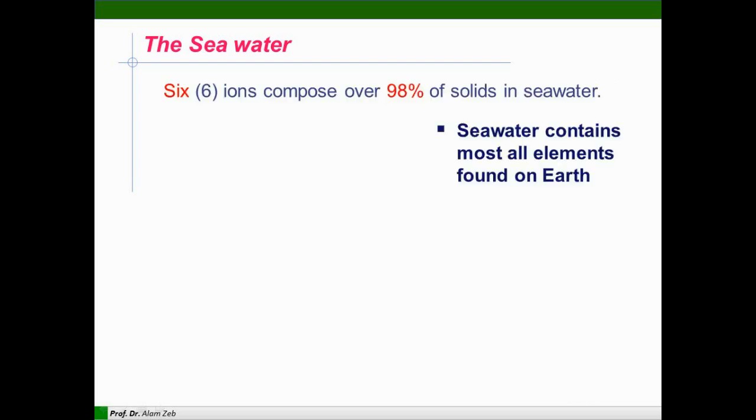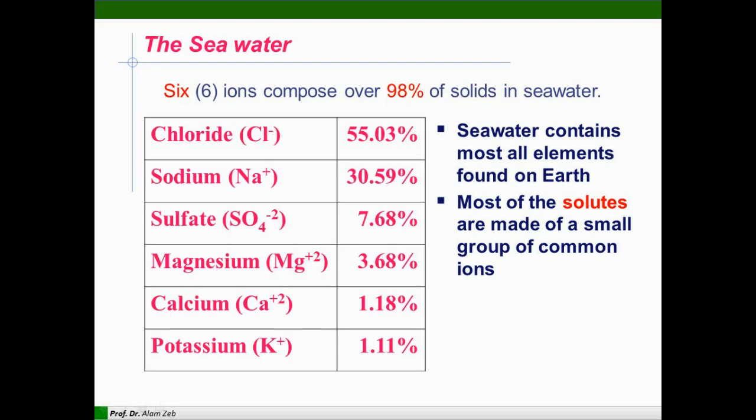Seawater composition. Six ions compose of 99.8% of the solid in seawater. It contains most of the elements found in Earth. Chloride contains 55%, sodium is more than 30%, sulfate more than 7%, magnesium, calcium, and potassium. Most of the solutes are made of a small group of common ions. In seawater, 85% of the constituting ions are sodium and chloride.